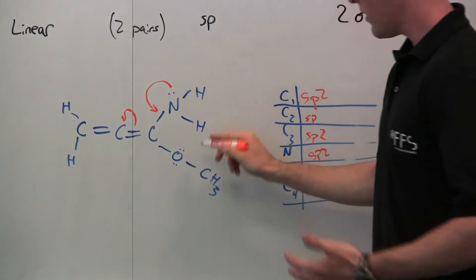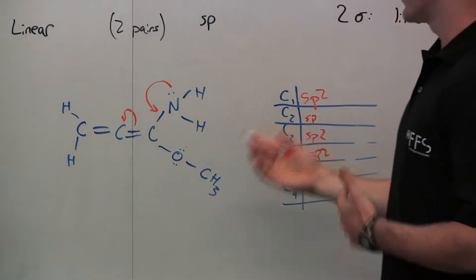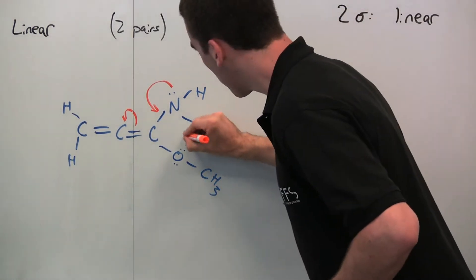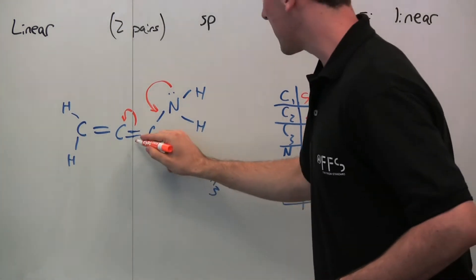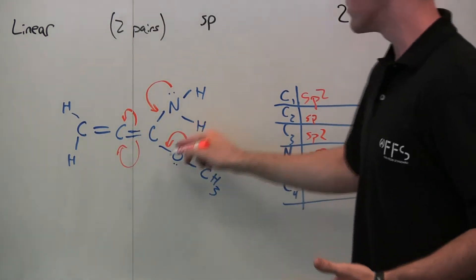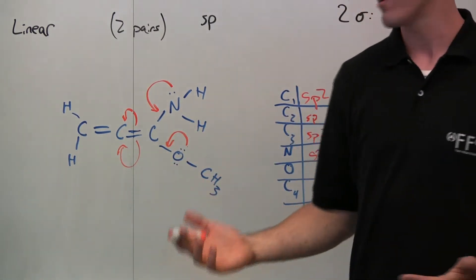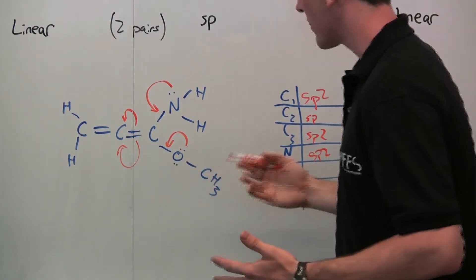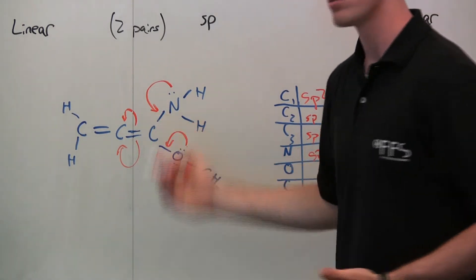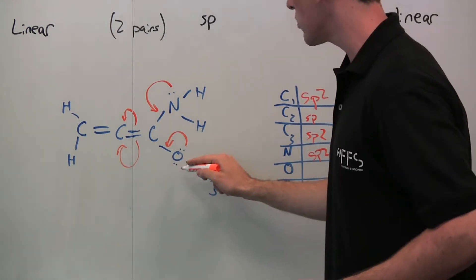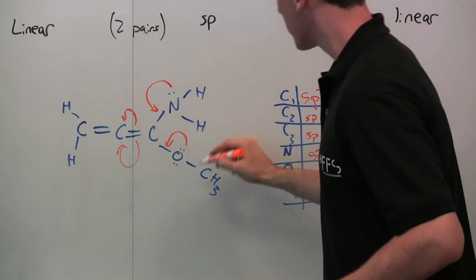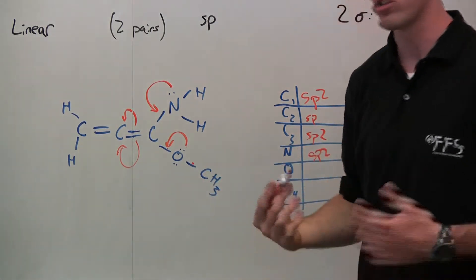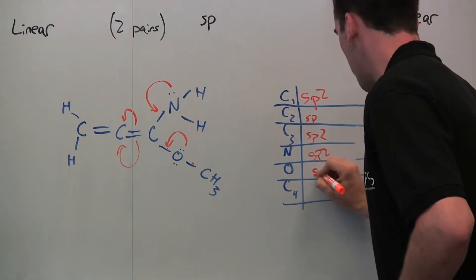Now we get to the oxygen. This oxygen has two pairs of non-binding electrons, so we need to characterize them. One of them can be moved — just like we did with the nitrogen — following that same common resonance theme. So one of these pairs is delocalized, but we can't move both of them because there's no other source of pi electrons. Therefore one is delocalized and one is localized, giving us one VSEPR pair from the localized electrons plus two sigma bonds — three total — so this oxygen is also SP2.